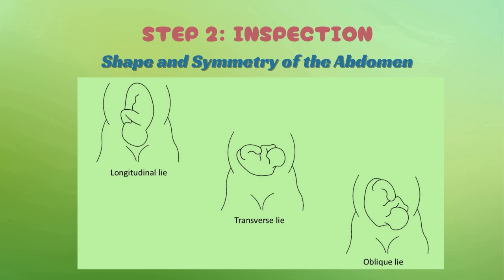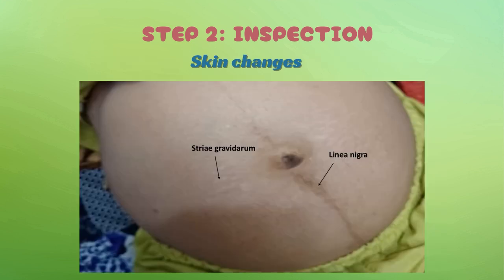You may notice suprapubic flattening — a reduced convexity or indentation just above the symphysis pubis — which could indicate engagement of the fetal head in the pelvis in later pregnancy. Sub-umbilical flattening could suggest an occipito-posterior position where the fetal back is directed posteriorly. An abdomen that looks too large for gestational age suggests polyhydramnios or macrosomia, while a smaller-than-expected abdomen could indicate growth restriction.